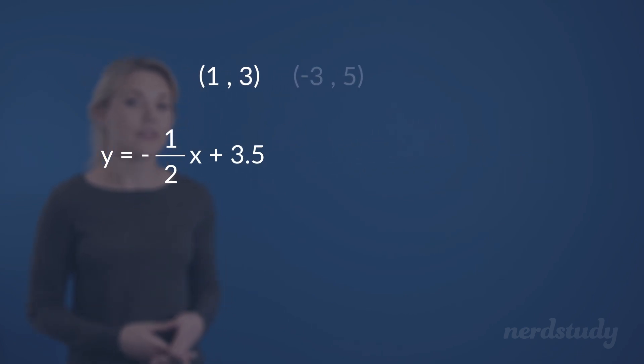And just to show that we could have easily used the other coordinate as well to yield the same linear equation, let's just try plugging in this point into the equation instead. So, simplifying the multiplication of negative 1 over 2 and negative 3 gives us 3 over 2, which is the same as 1.5. And subtracting both sides by 1.5 gives us a final b value of 3.5. So, we can also plug this back into our equation for b and see that we got the exact same answer in the slope-intercept form.